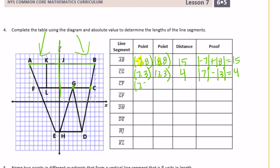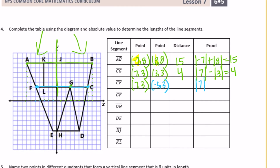Segment CF: C was at 7, 3 and F is at negative 5, 3. They're on opposite sides of 0, so we add: absolute value of 7 plus absolute value of negative 5 equals 12. The distance is 12. Segment GF: G was at 3, 3 and F was at negative 5, 3. They're on opposite sides of 0, so we add: absolute value of 3 plus absolute value of negative 5 equals 8. The distance is 8.